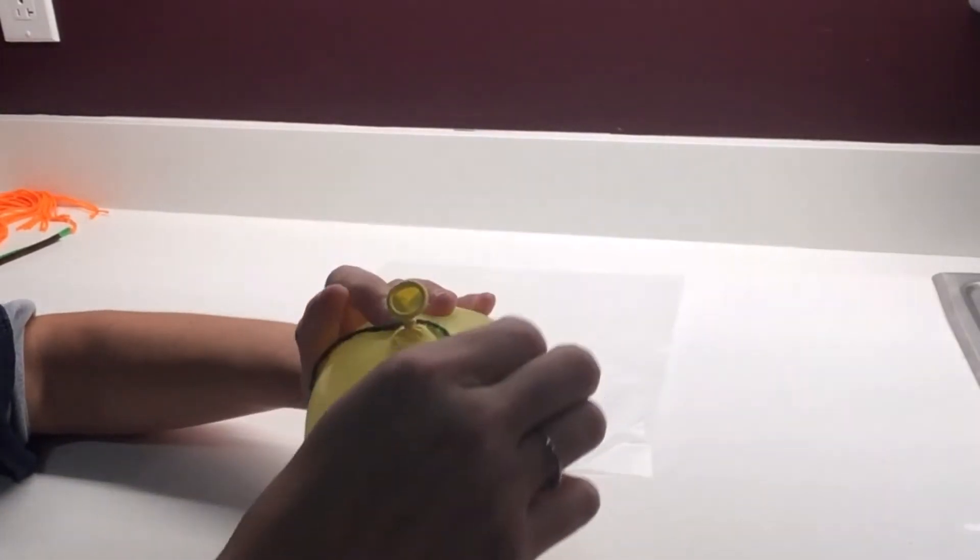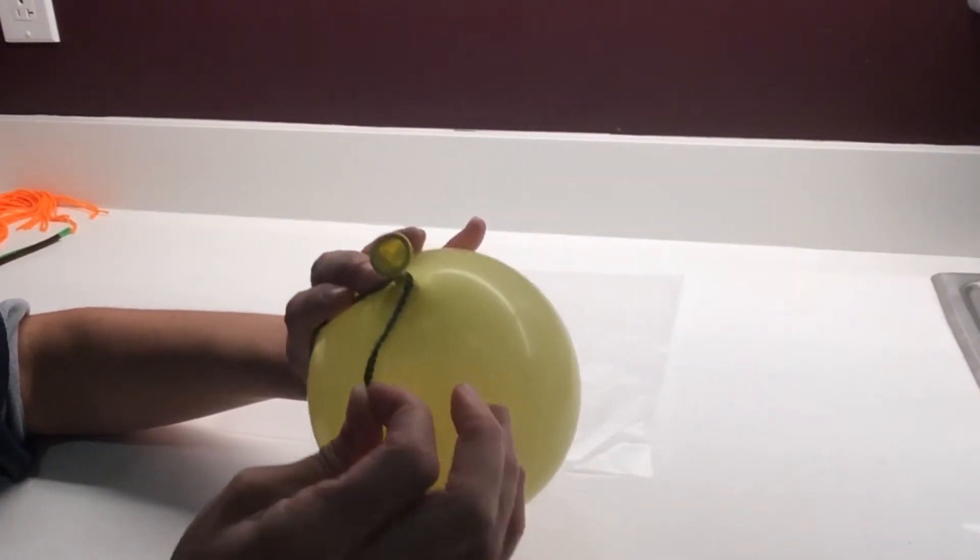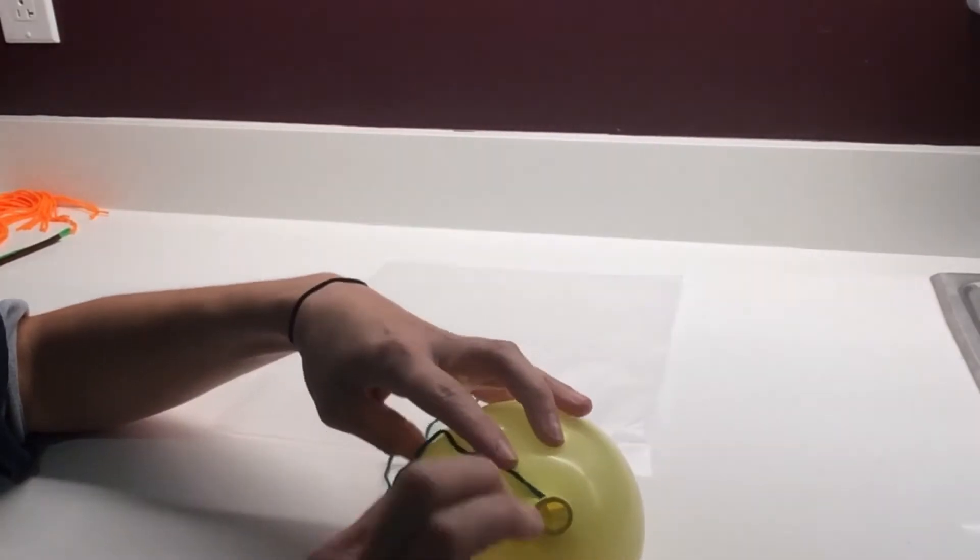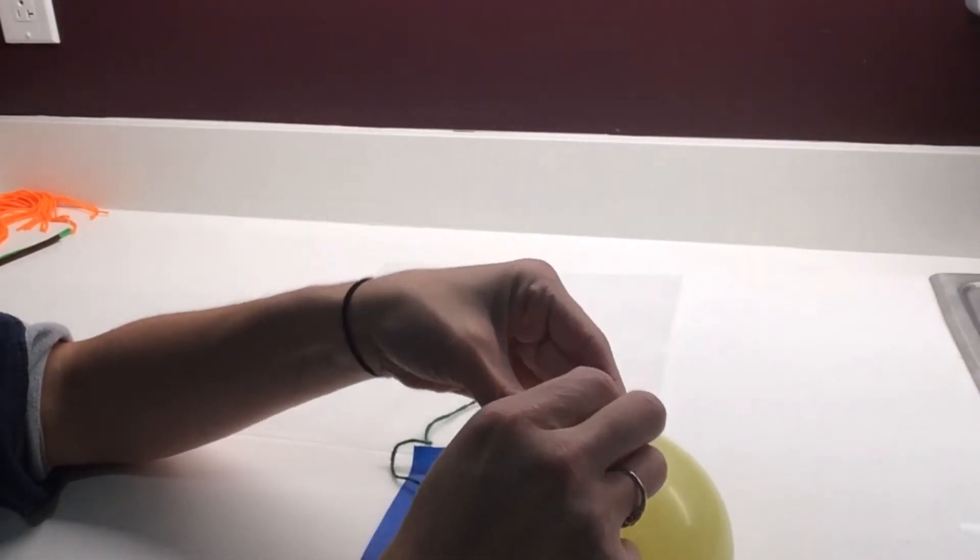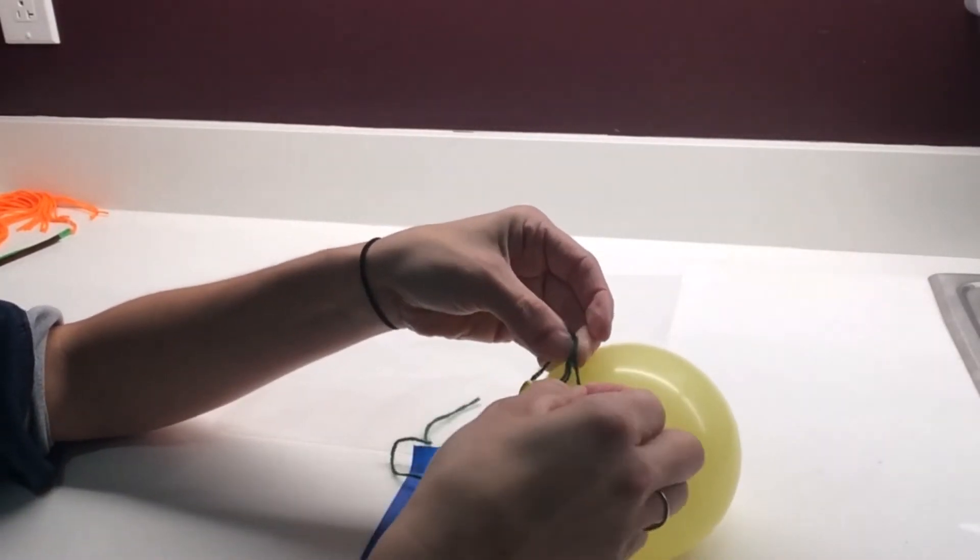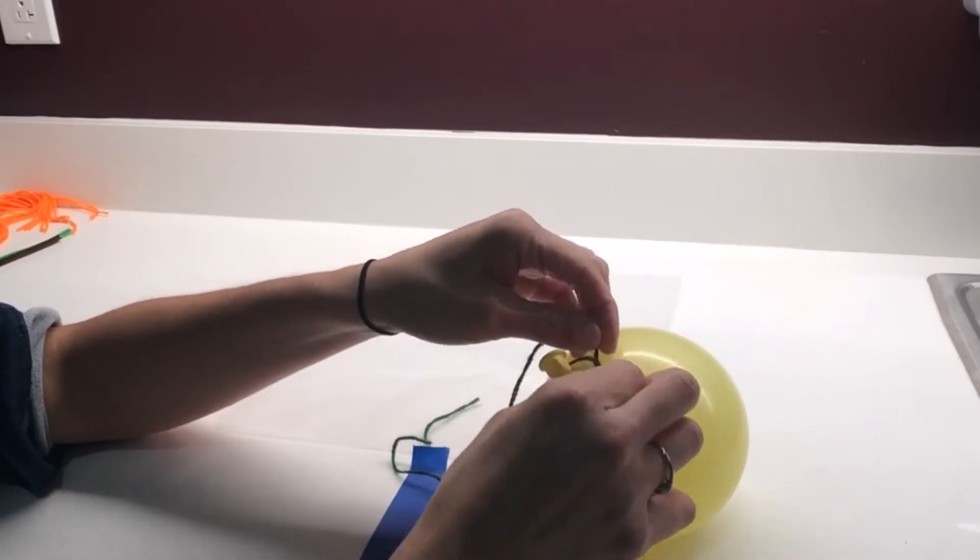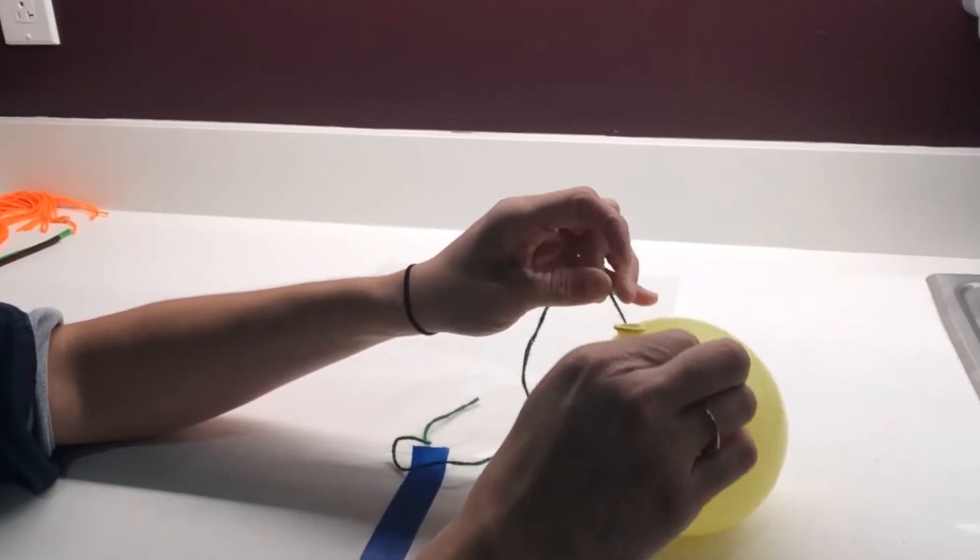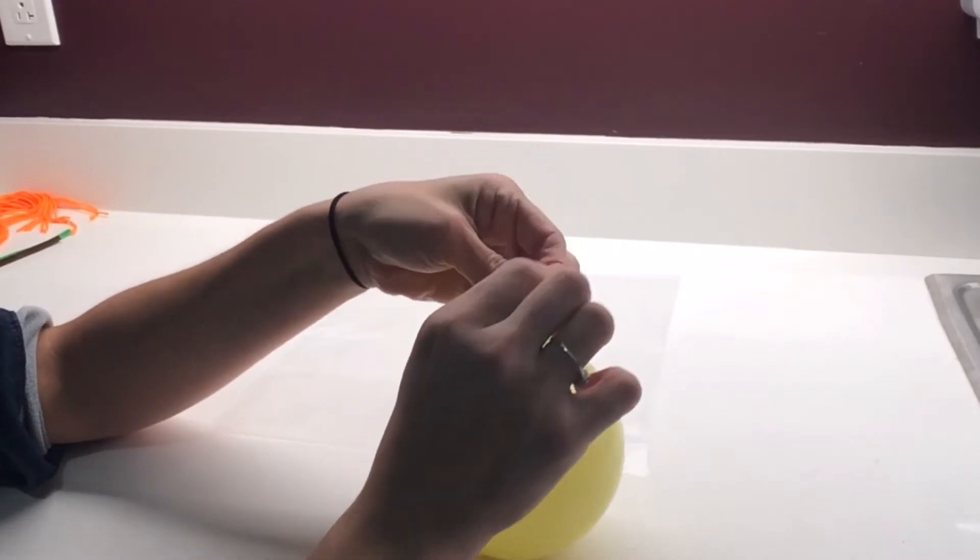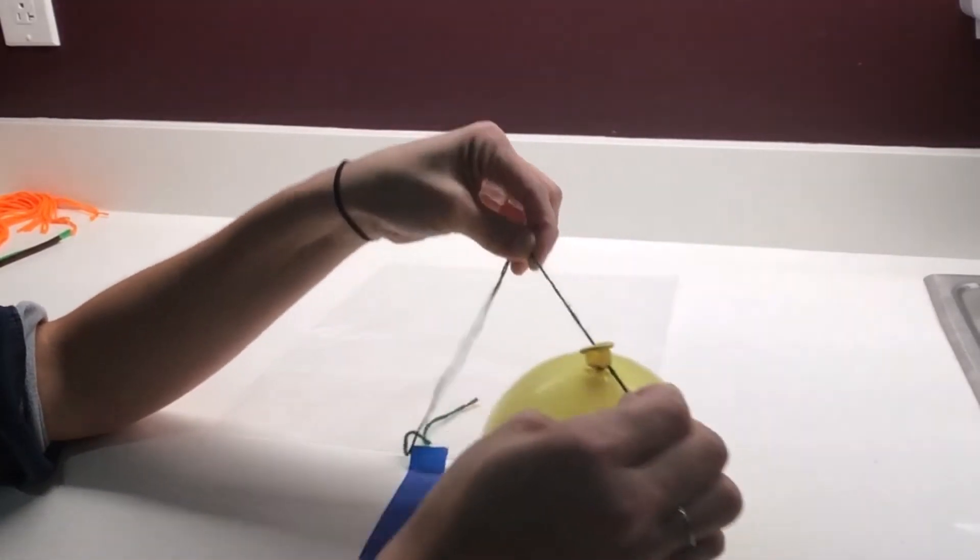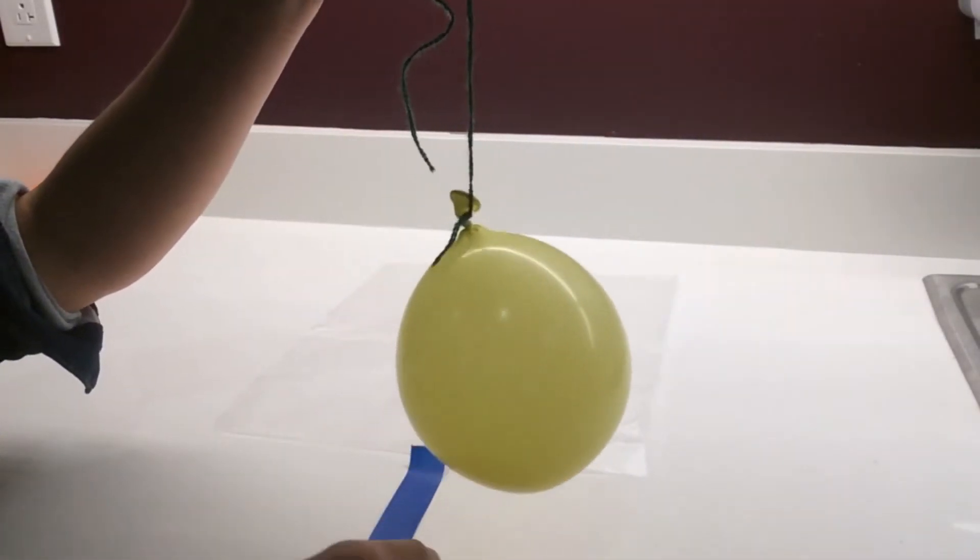And you're going to attach the green piece of yarn and tie it onto the knot in the balloon.